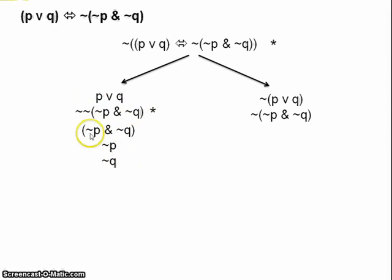So all that's left on the left side is P or Q. So we need two branches, on one we assume P, on the other we assume Q.